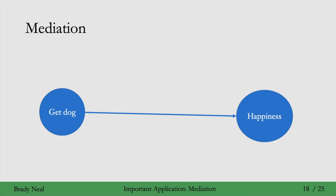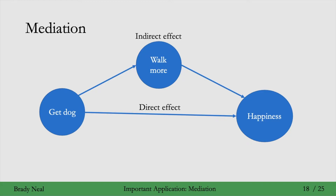So I might draw a causal graph like this. The causal effect that's not due to walking — stuff related to having a dog that affects my happiness that's not due to walking — is known as the direct effect. And the amount of happiness from having a dog that's due to walking is known as the indirect effect, mediated by the walking mediator. So this is what mediation analysis is about.